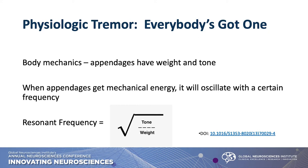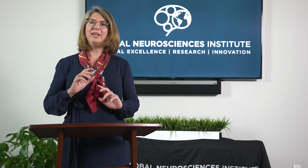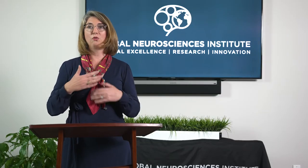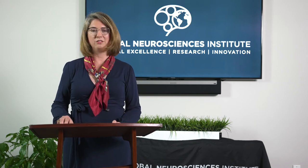Everybody has a tremor. I tell my patients, we all hum at some rate — some of us just hum more than others. When thinking about that rate and frequency, there is a way to manage it even without medications. If you adjust the tone of the appendage and adjust the weight impact on it, you can change the frequency of the tremor. With all tremor management, we're really trying to make it manageable — nothing is going to make the tremor go away or stop it completely. If we can make it more manageable for patients through any means, that is a practical solution.